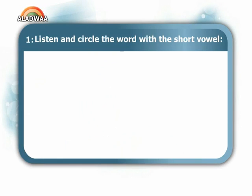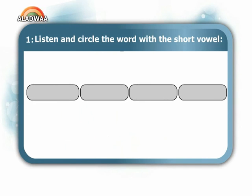Listen and circle the word with the short vowel. استمع مع وضع دائرة حول الكلمة التي بها صوت حرف متحرك قصير غير ممدود.